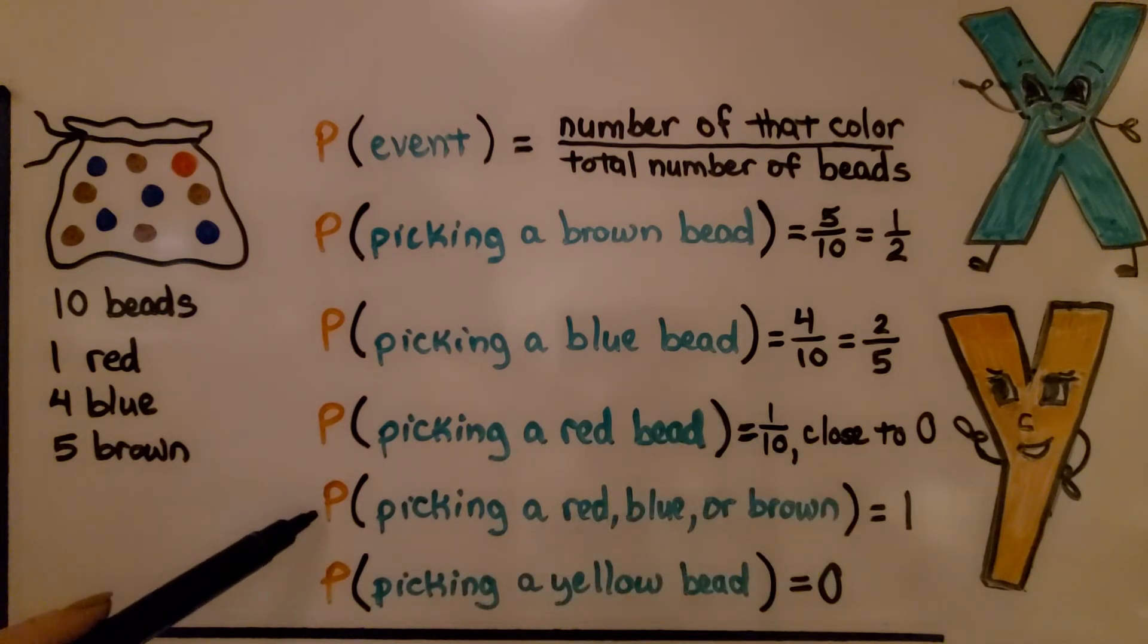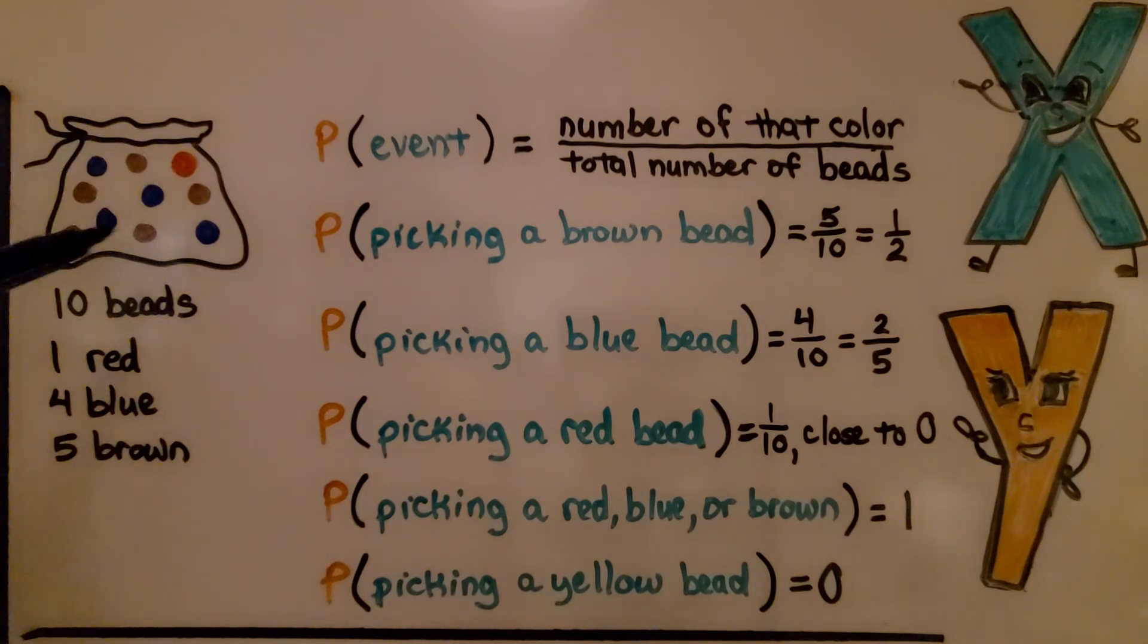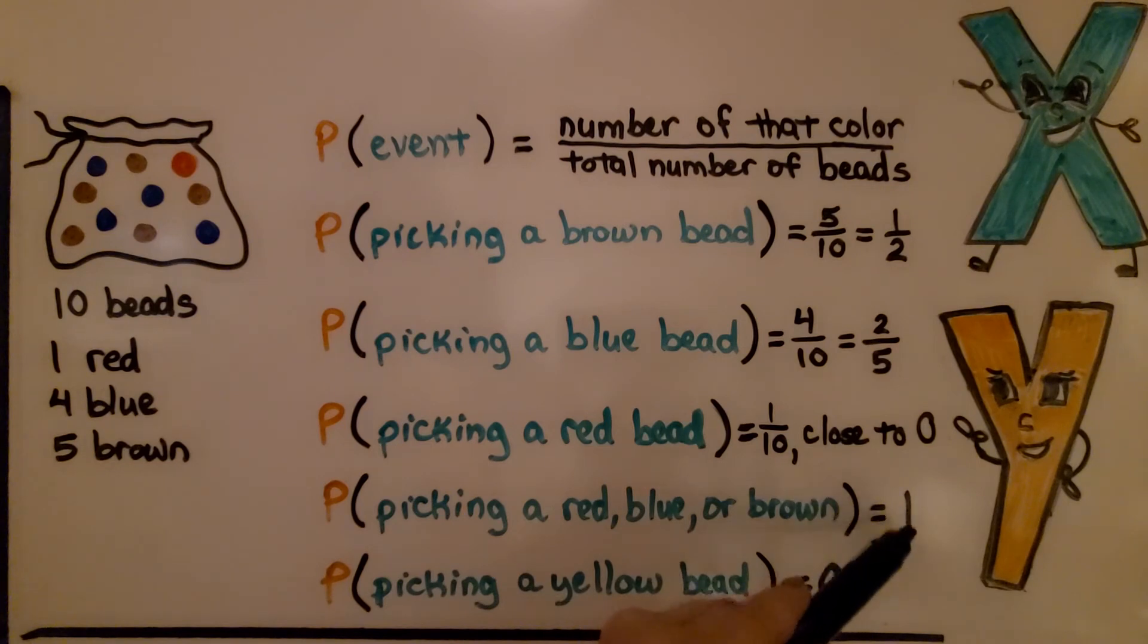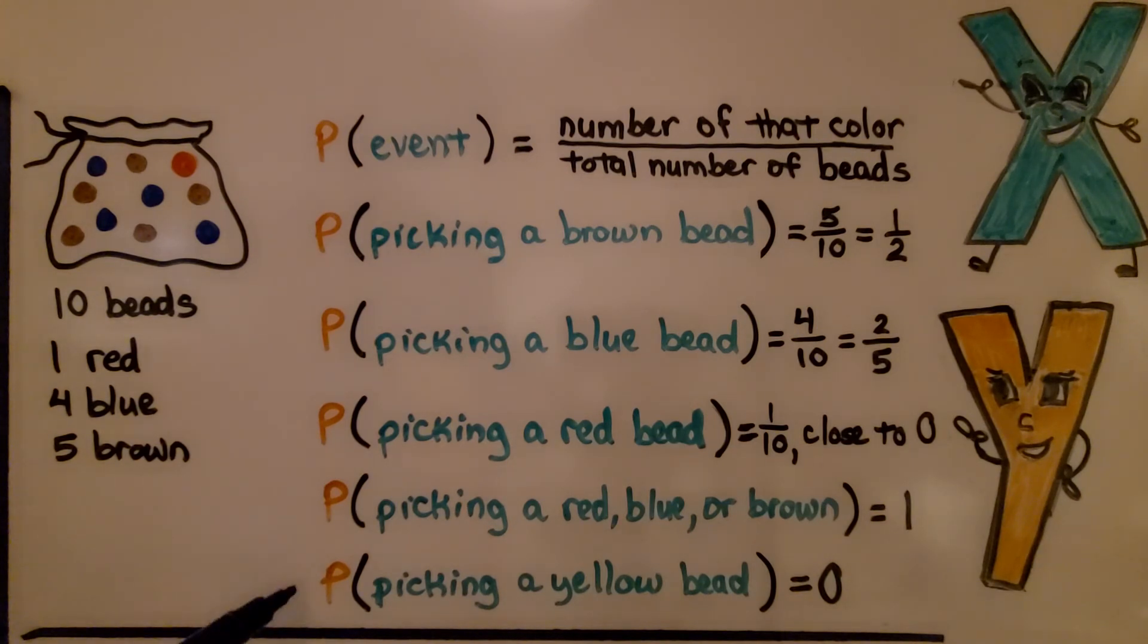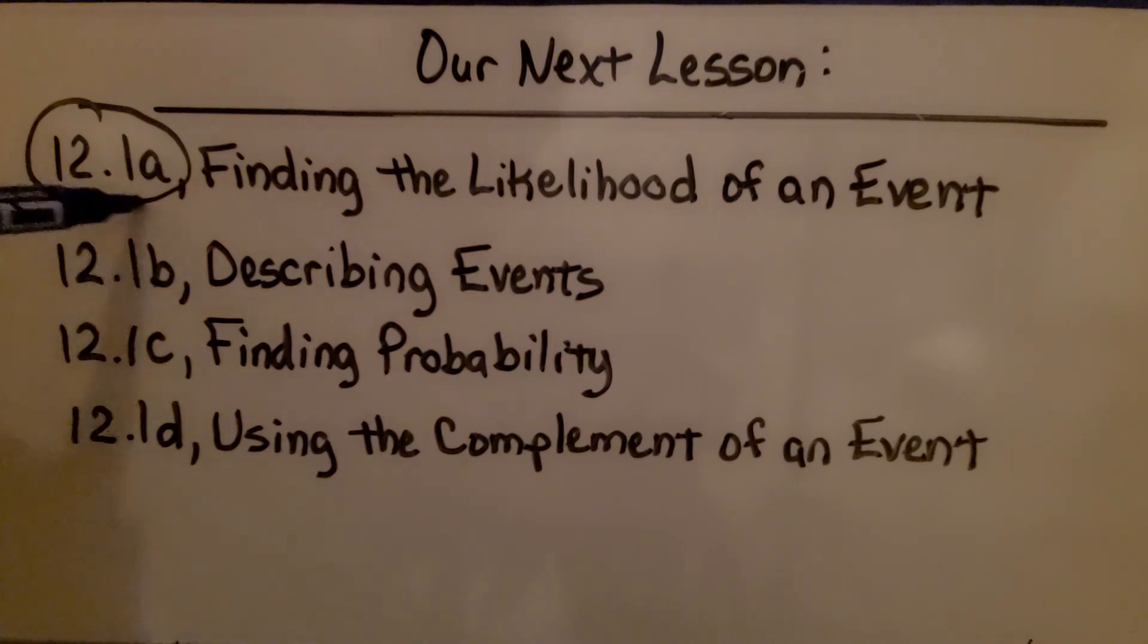The probability of picking a red, blue, or brown bead, well those are all the colors in the bag, so that's a one. That's certain that we'll do that because those are the three colors in the bag. We have a 100% chance of choosing one of those colors. The probability of picking a yellow bead is zero. There are no yellow beads in the bag. We've finished describing events. We're going to move on to finding probability.